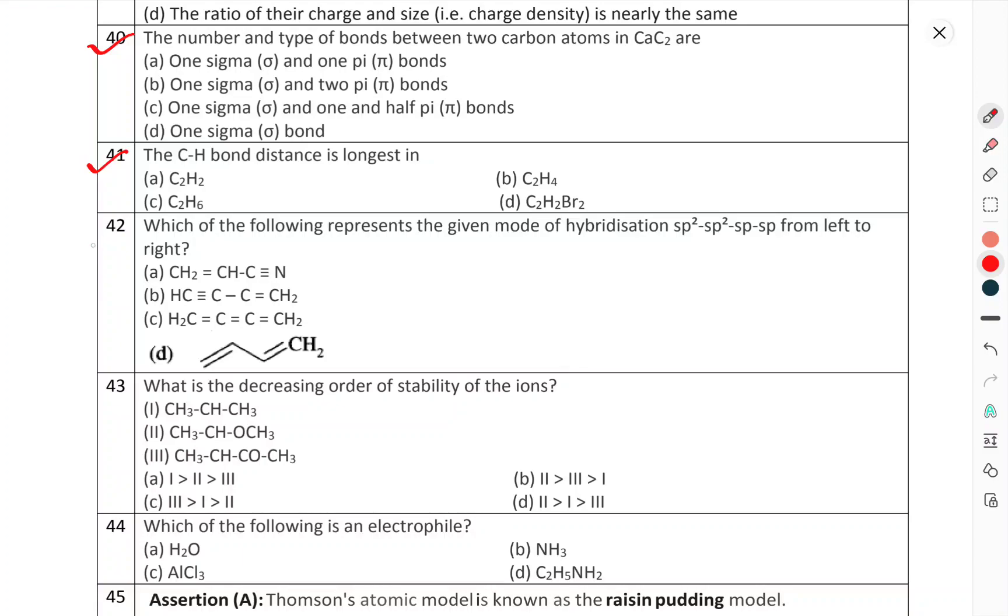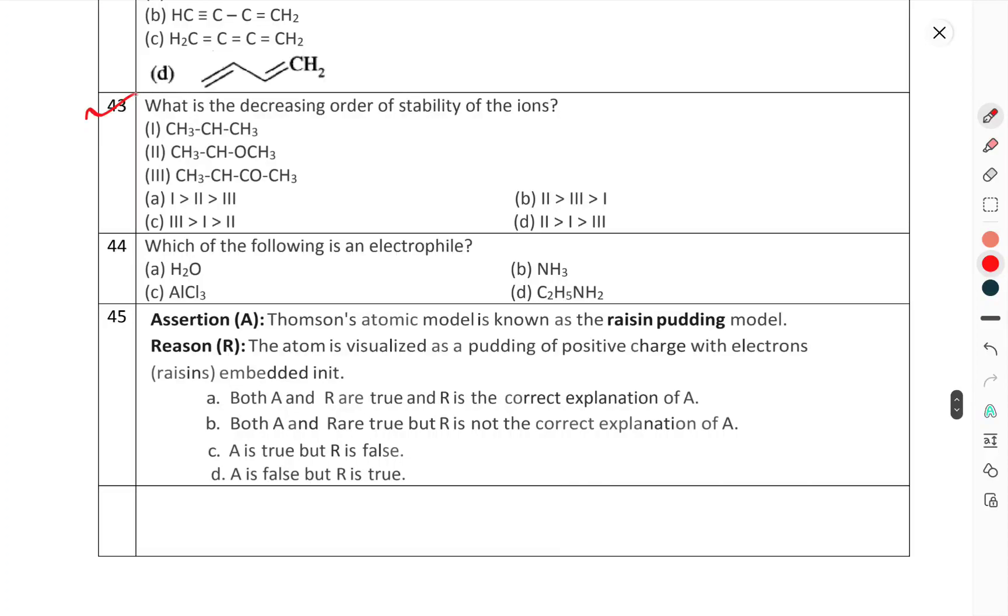Question number 41: The C-H bond distance is the longest in. Question number 42: Which of the following represents the given mode of hybridization sp2-sp2-sp2-sp-sp from left to right? Question number 43: What is the decreasing order of stability of ions? Question number 44: Which of the following is an electrophile?